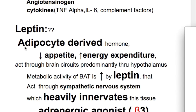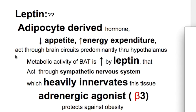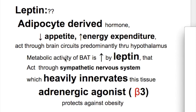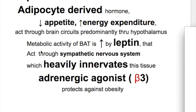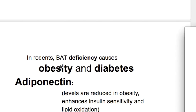Leptin is an adipocyte-derived hormone that decreases appetite and increases energy expenditure. It acts through brain circuits, predominantly through the hypothalamus. Metabolic activity of BAT (brown adipose tissue) is increased by leptin, which acts through the sympathetic nervous system, which heavily innervates this tissue.